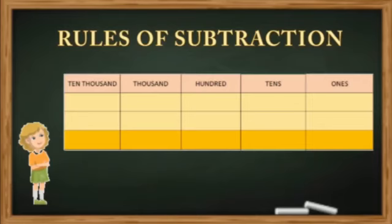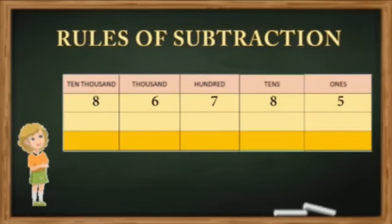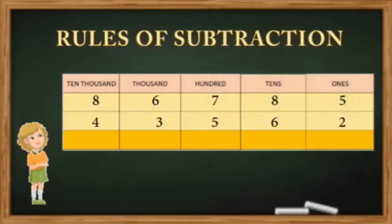The number here is 86,785 — eighty-six thousand seven hundred eighty-five. This number becomes the minuend, and the minuend is always the greater number. Now 43,562 — forty-three thousand five hundred sixty-two — needs to be subtracted. This becomes the subtrahend, and we need to find the difference.